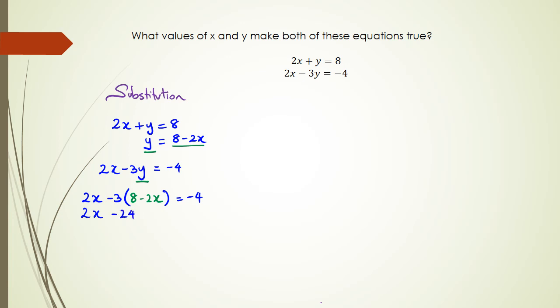At this point you expand: 2x minus 3 times 8 is negative 24, minus 3 times minus 2x is plus 6x, and that equals negative 4. So we end up with 8x minus 24 equals negative 4, so 8x equals 20, or x equals 20 divided by 8.